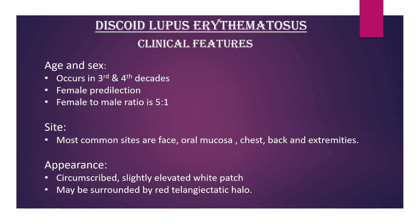Discoid Lupus erythematosus — clinical features. Age and sex: occurs in the 3rd and 4th decades with female predilection; female to male ratio is 5 to 1. Most common sites are face, oral mucosa, chest, back, and extremities.